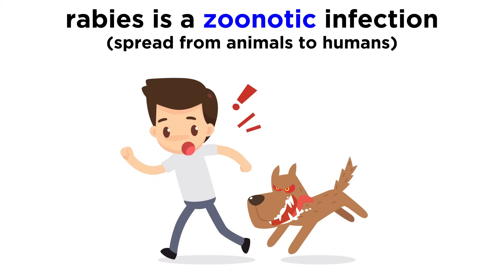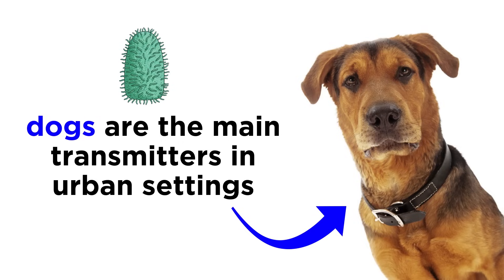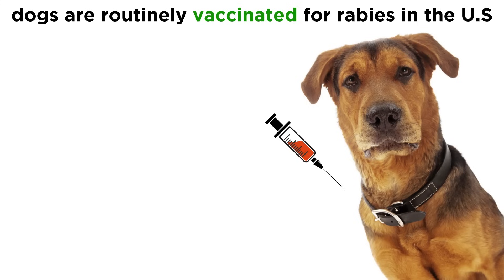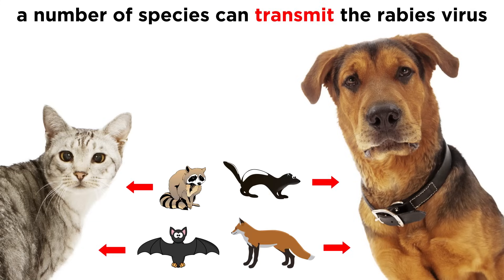Rabies is considered a classic zoonotic infection, spreading from animals to humans. The rabies virus is endemic — meaning regularly found — all over the world, with the exception of Australia. In urban settings, dogs are the main transmitter, but many species of wildlife can transmit the virus. In the United States in particular, we have a robust vaccination program for dogs, so rabies is actually more prevalent in cats, because they are not vaccinated. Other than that, in the US, wild raccoons, skunks, bats, foxes, and farm animals can pass the virus to unvaccinated cats or dogs.